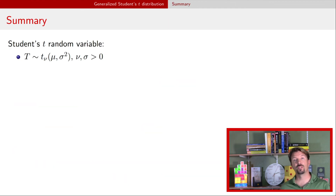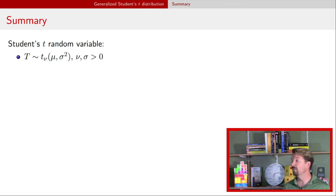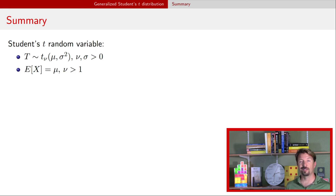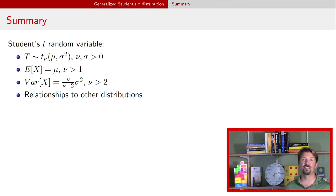In summary, we talked about Student's t random variables and generalized Student's t random variables. The generalized t has three parameters: degrees of freedom nu, location mu, and scale sigma. Nu and sigma both need to be greater than zero, but mu is unrestricted. The expectation is mu when nu is greater than 1, and the variance is nu divided by (nu minus 2) times sigma squared when nu is greater than 2. We also discussed relationships to the Cauchy distribution, convergence to the normal, and how t-distributions arise from normal samples. After this, we'll start talking about Bayesian inference in a normal model.